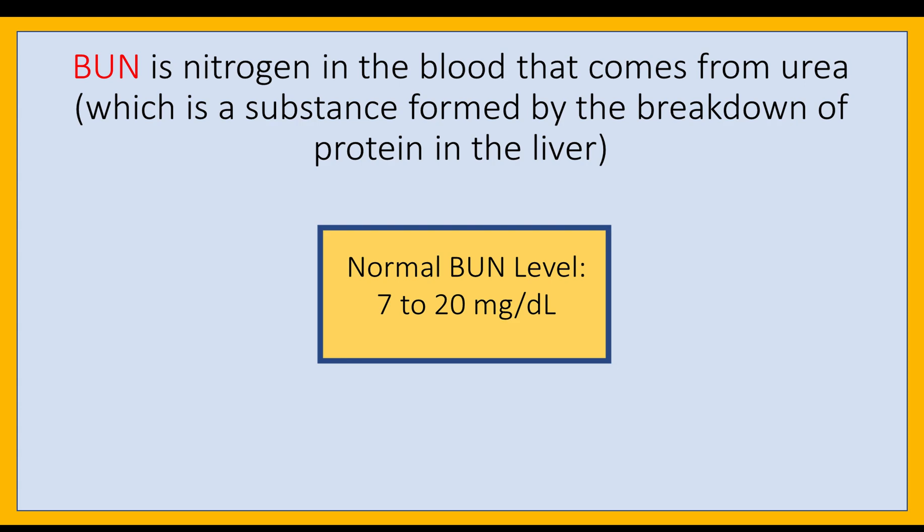To recap, here's how your body typically forms and gets rid of urea nitrogen. Your liver produces ammonia, which contains nitrogen, after it breaks down proteins used by your body's cells. The nitrogen combines with other elements, such as carbon, hydrogen, and oxygen, to form urea, which is a chemical waste product. The urea travels from your liver to your kidneys through your bloodstream. Healthy kidneys filter urea and remove other waste products from your blood. The filtered waste products leave your body through urine.